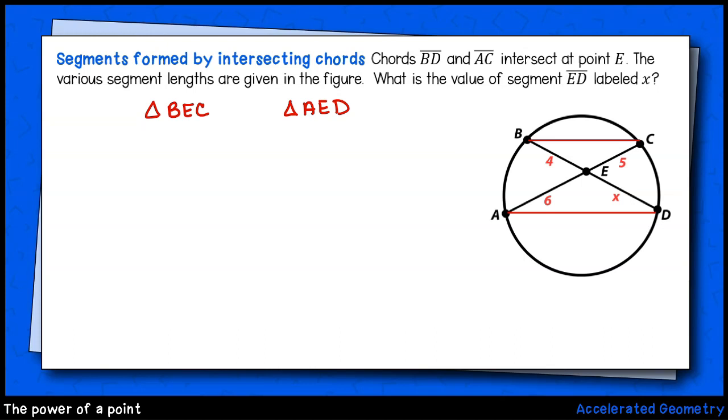I'll also take note that angle BEC is congruent to angle AED because they are vertical angles. Next, I'll look for any other congruent angles. If I look at angle CBD as an inscribed angle and do the same for angle CAD, I see that these two inscribed angles intercept the same arc in the circle. That means these angles are congruent as well.